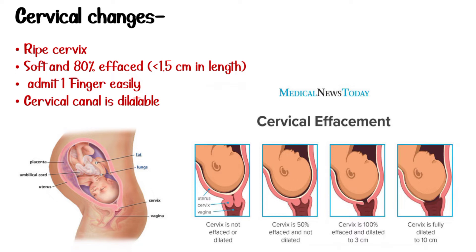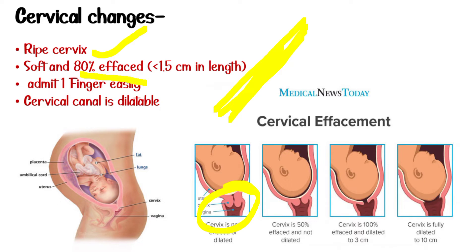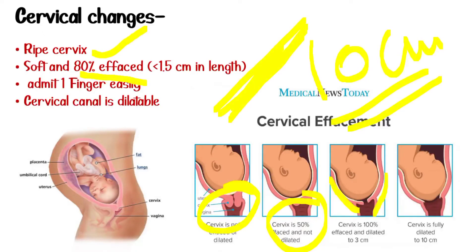What are normal labour cervical changes? The cervix ripens and becomes very soft — 80% effaced. Effaced means it feels like a sheet of paper. We can admit one finger easily. The cervical canal is dilatable. Here the canal is 50% effaced and dilatable. After 100% effacement, the cervix becomes fully dilatable, up to 10 cm.